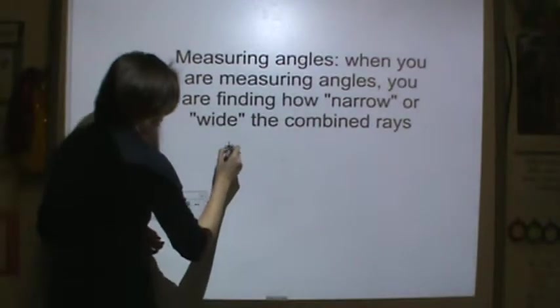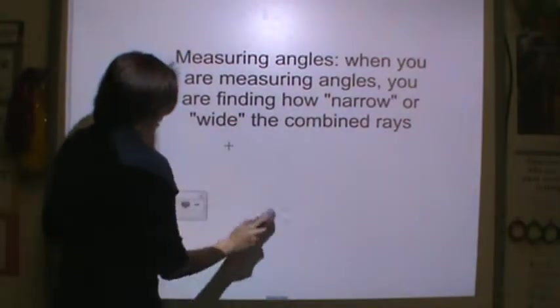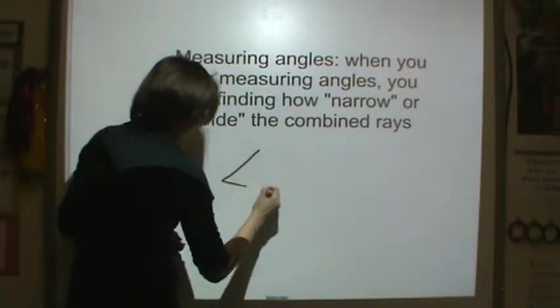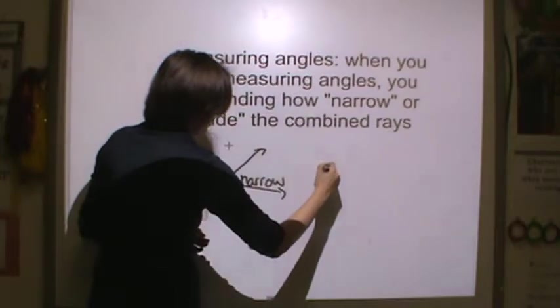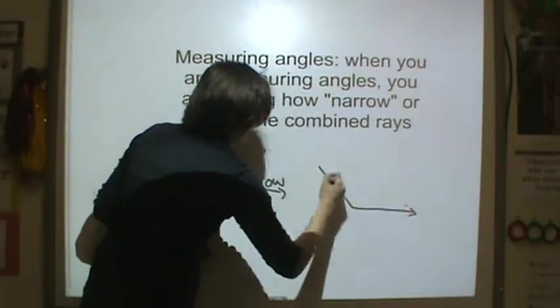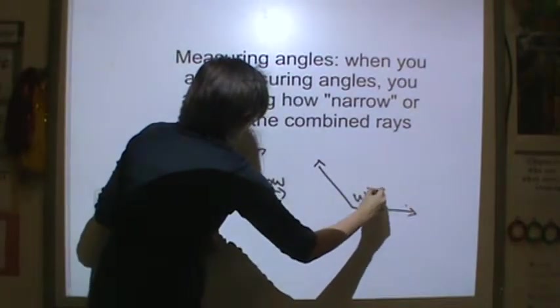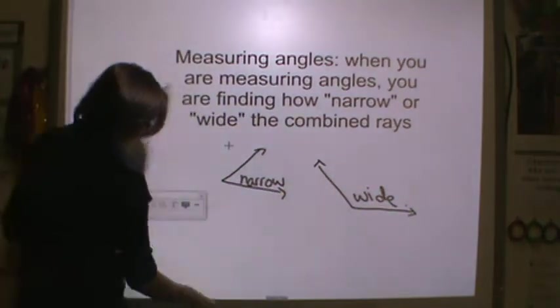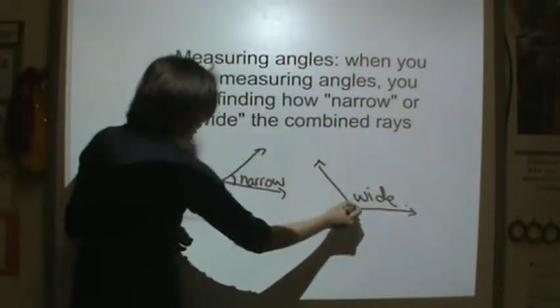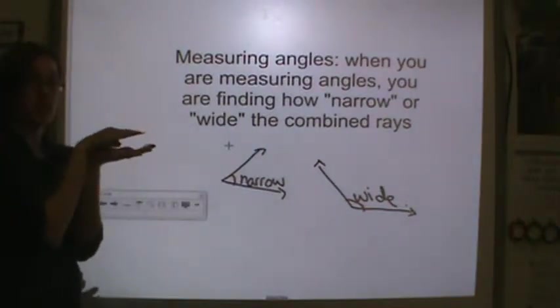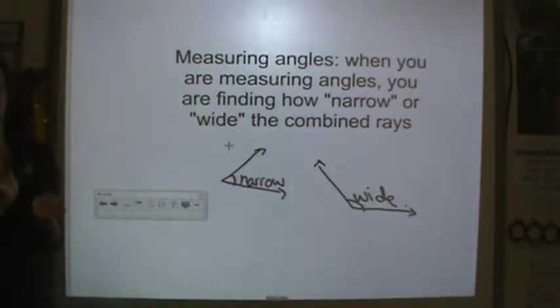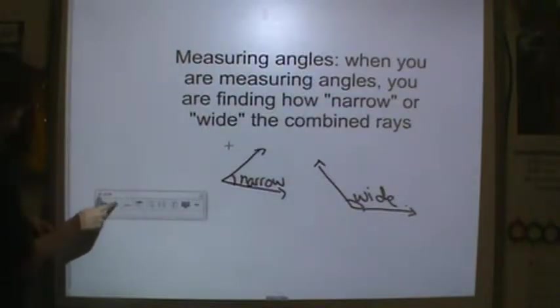If I were to draw a narrow angle, this would be narrow, compared to this angle which would be more wide. When I'm measuring an angle, I'm looking at how close together my rays are. Are they really close together, like an acute angle, or really wide, like an obtuse, straight, or reflex angle?